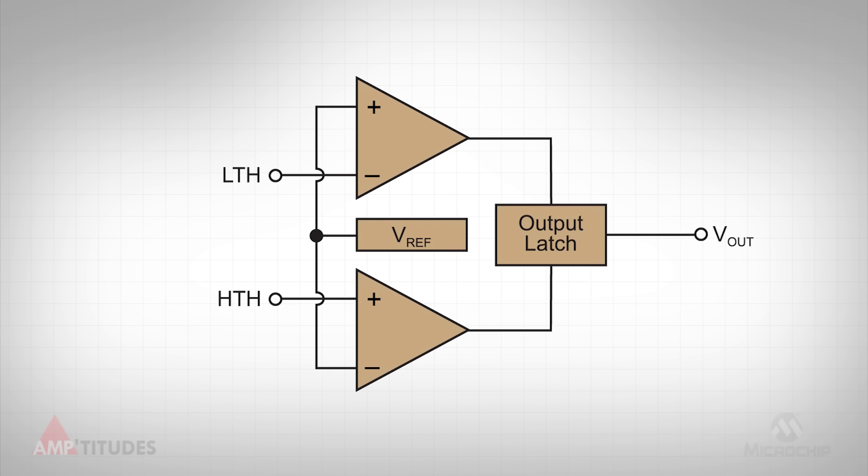A simple block diagram of a windowed comparator is shown here. Although windowed comparators are typically monolithic integrated circuits, they function like two comparators with a common reference. The two inputs to a windowed comparator are their low and high threshold voltages, which are set via external resistors, as shown here.